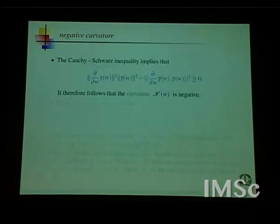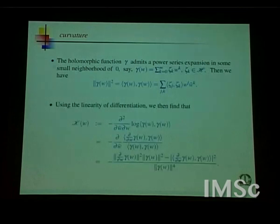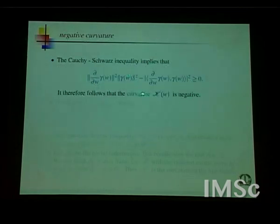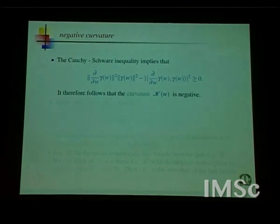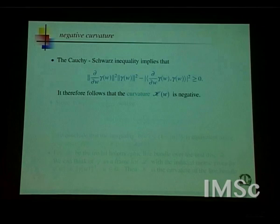If you apply the Cauchy-Schwarz inequality, you look at the numerator — which is the inner product of γ with γ′, bounded by the product of the two norms. You apply Cauchy-Schwarz and observe that the numerator is positive, but because we had a negative sign outside, the expression K(ω) — which I would like to call the curvature, the curvature of the line bundle determined by the holomorphic family γ(ω) — ends up being negative. The simple Cauchy-Schwarz inequality tells you that in our setup, the curvature happens to be negative.